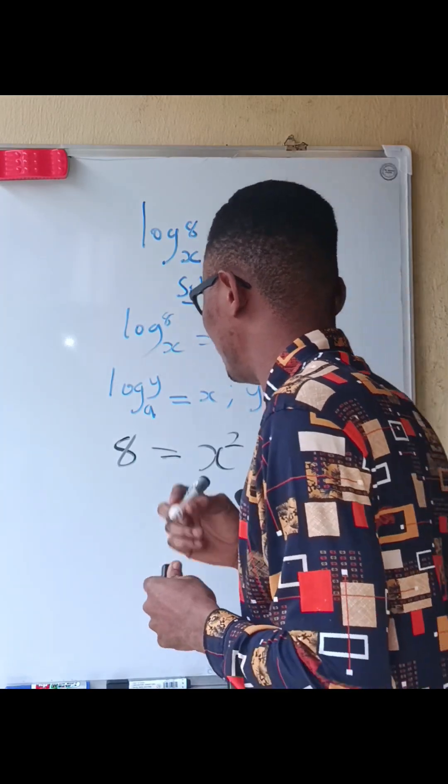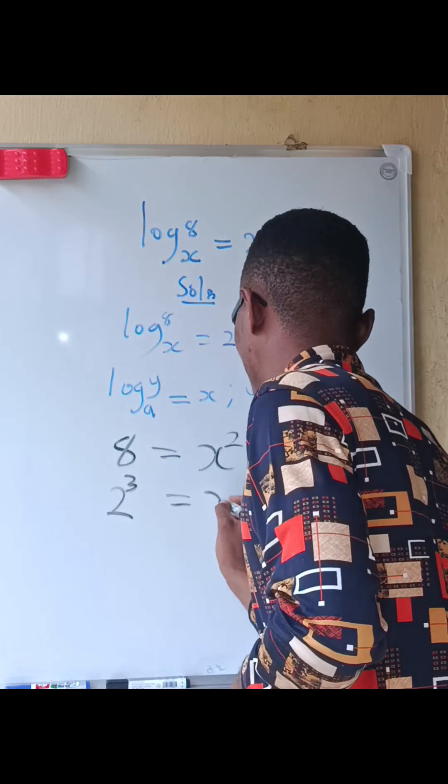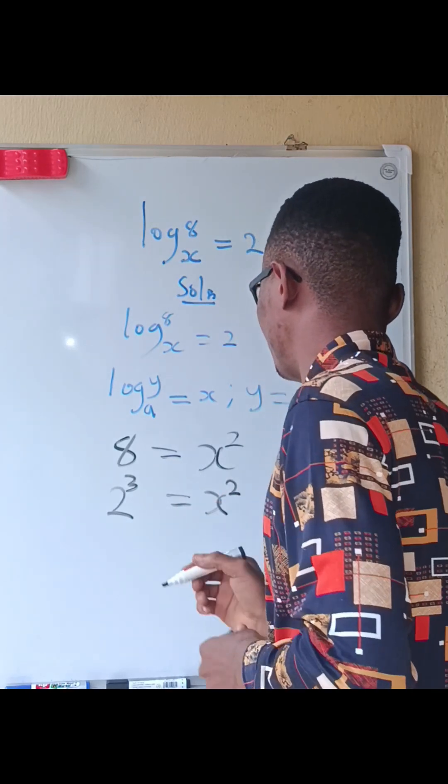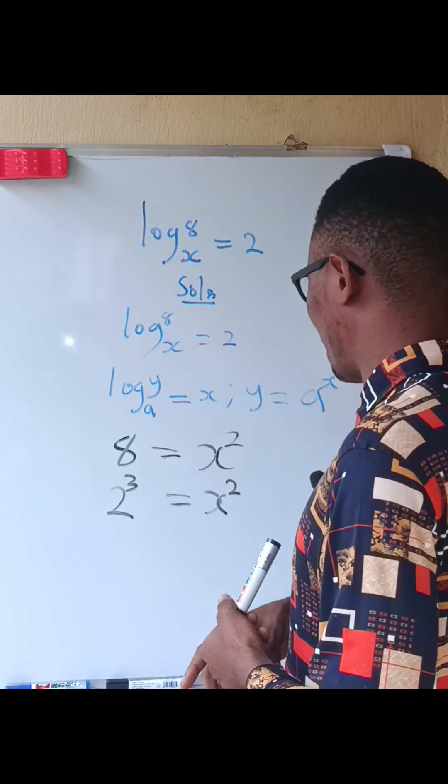We can reduce it to 2 power 3 equals x power 2. Since we are looking for x not x squared, we are going to divide through by the power, so divide through by 2.